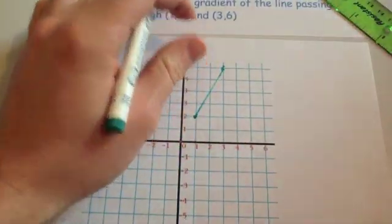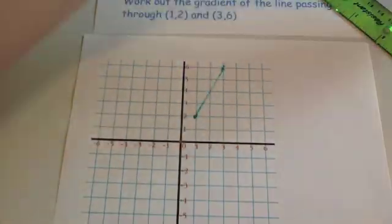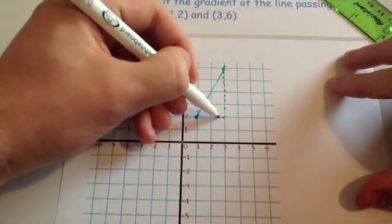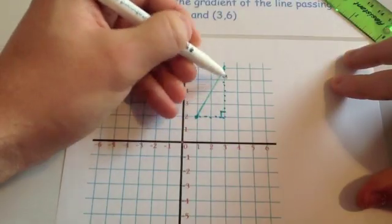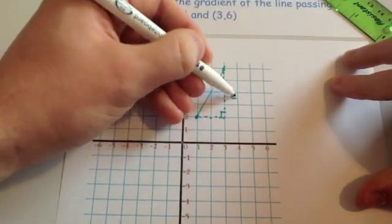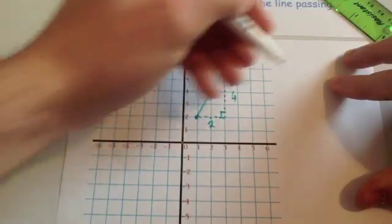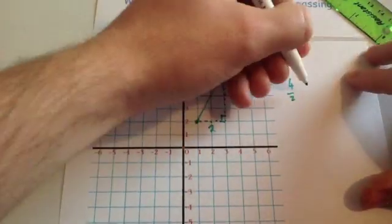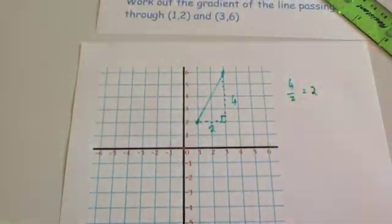Remember we could use rise divided by run. So if we were to use rise divided by run, you would draw a little triangle like so, a right angle triangle. The rise is 1, 2, 3, 4. The run is 1, 2. And you do the rise, 4, divided by the run, 2. And 4 divided by 2 is 2, so the gradient of the line is 2.